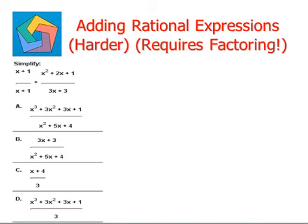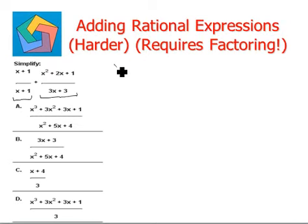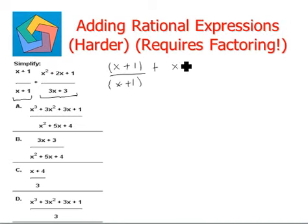The first one says simplify, and we are given two rational expressions to be added. Let's write down: x plus 1 divided by x plus 1, plus x squared plus 2x plus 1, divided by 3 times x plus 3.